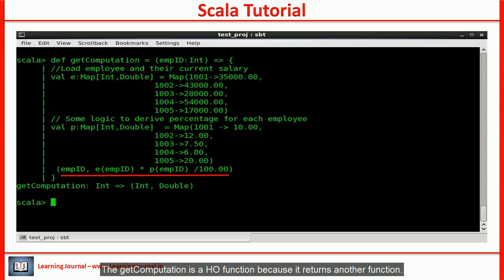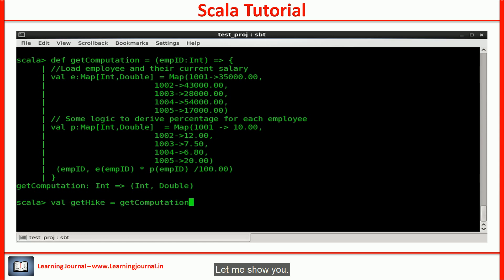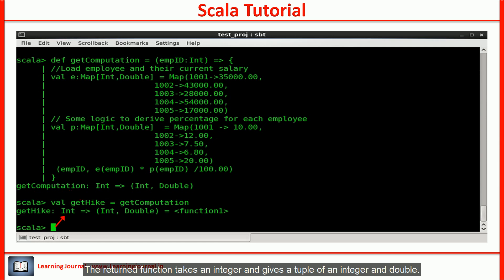The getComputation is a higher order function because it returns another function. Let me show you. The variable getHike is holding an anonymous function. The return function takes an integer and gives a tuple of an integer and double.